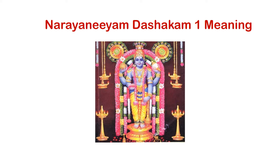Bhattatri says that this very form of supreme consciousness — reality, whatever people call it — he can see in front of him in the image of the Lord of Guruvayur. Bhattatri was sitting exactly opposite the main sanctum of Guruvayur. He sees that all this Tattva — consciousness, supreme — is there in front of him in this image of the Lord. This is nothing but 'Hanta Bhagyam Janana' — the good fortune of people.